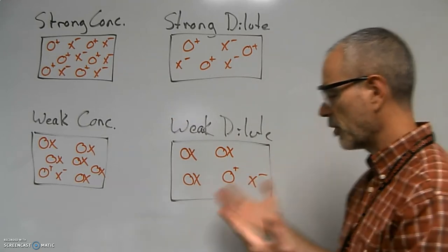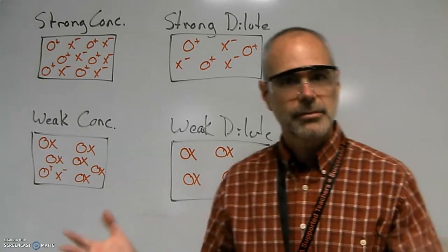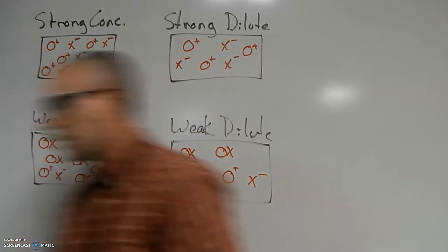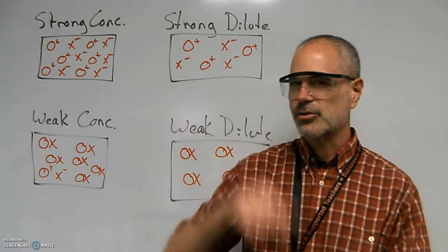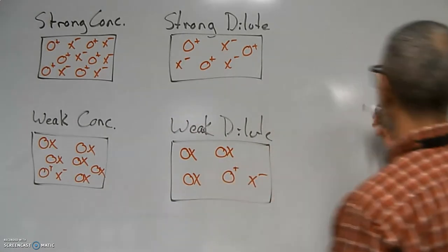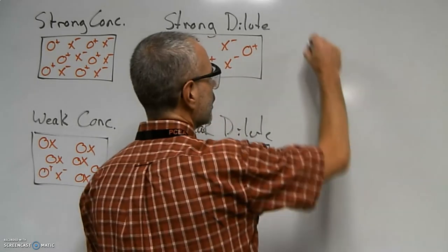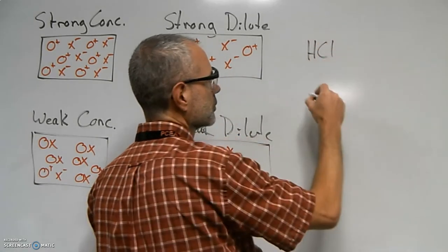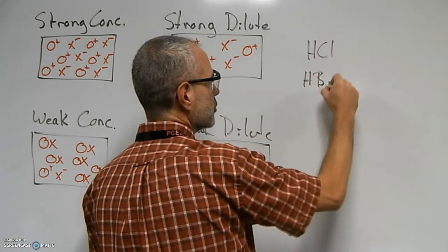So first let's talk about what is a strong acidic solution. There are seven, which I've mentioned in the lectures previously. There's seven strong acids that you should be aware of, and they are here: HCl, HBr,